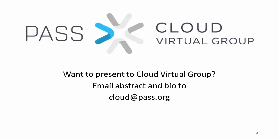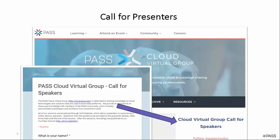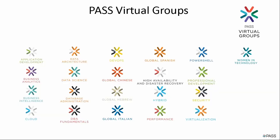If you're interested in presenting for the user group or virtual group, you can email us at cloud.pass.org, or go to the cloud.pass.org website and fill out the call for speakers form. This virtual group is part of a number of other virtual groups that PaaS supports for the community, covering areas such as DevOps, High Availability and Disaster Recovery, and language-focused groups like the Global Spanish and Global Chinese virtual groups.